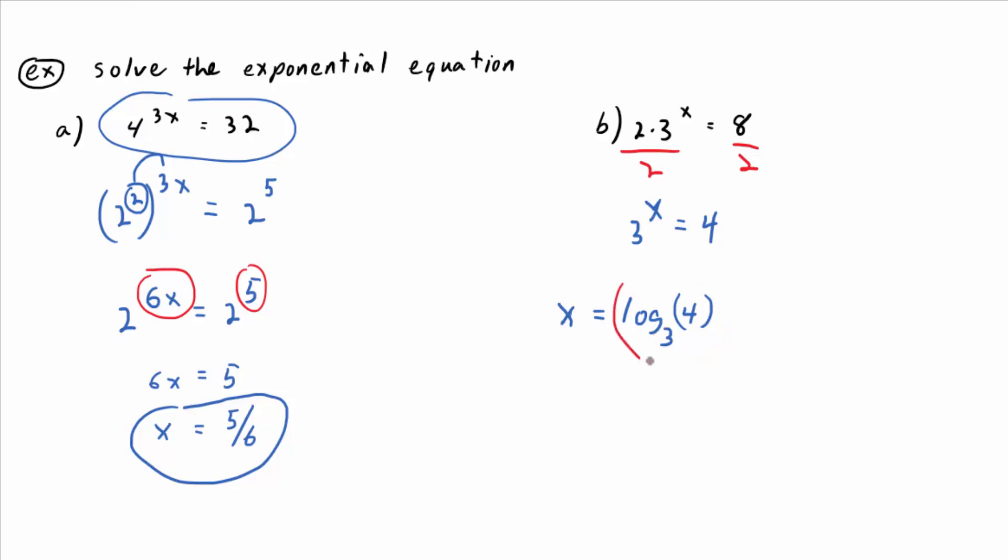So what you have to group together is the log with its subscript of 3. That's the name of the function, log base 3. It's like f of 4. The input is 4. Log base 3 is the name of the function.